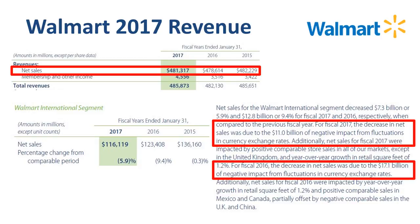Walmart International operates in many countries, including Mexico, Brazil and many other countries in Latin America, Canada, the United Kingdom, China, Japan and Africa. In each of these countries, transactions — selling, buying, paying salaries, operating stores — happen in local currency. For reporting purposes, all those amounts are converted to US dollars, as that is the currency that Walmart reports in to the stock market.